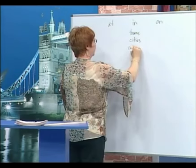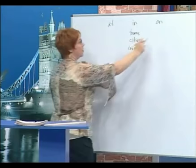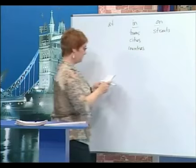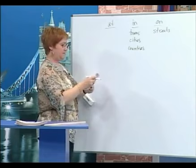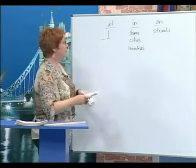Towns, cities, and countries. We use on for streets. And we use at for a special place where maybe two streets meet, like a corner. So: in, on, and at.